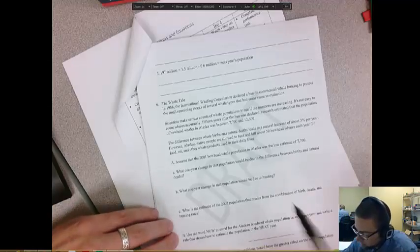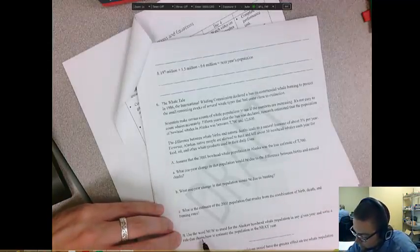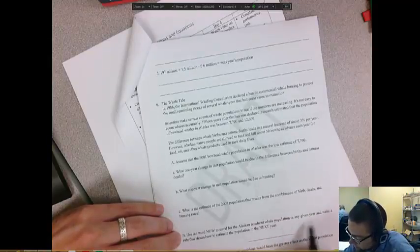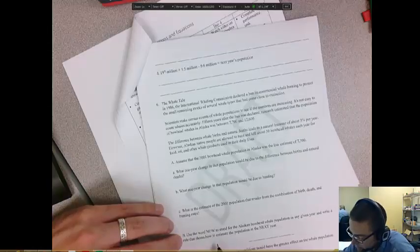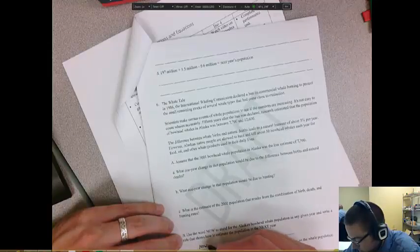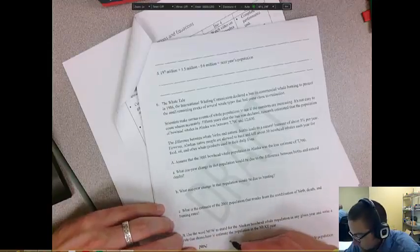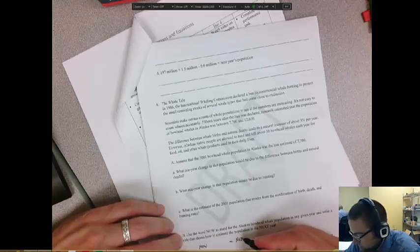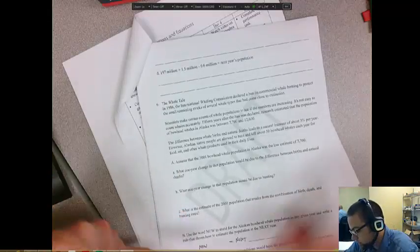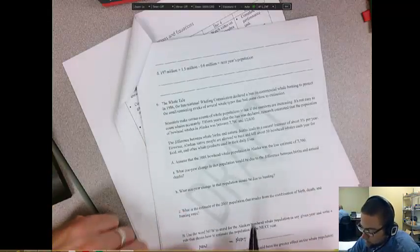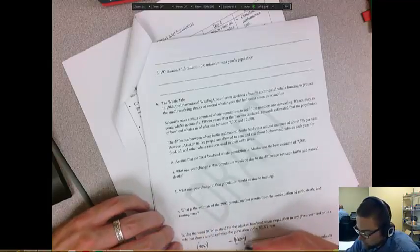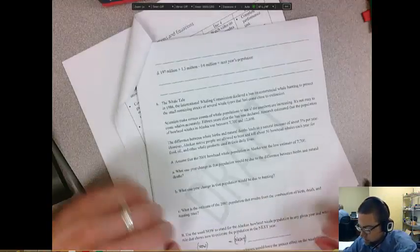And here you'll have to write that mathematical model out. So use the word now to stand for the Alaskan bowhead whale population in any given year. And write a rule that shows how to estimate the population for the next year. So you have now, and then some equation, equals next, right? So are you going to multiply that by something, and are you going to subtract away something? So use this information. Use this as your variable. So you can put parentheses around it to show that that represents a single variable.